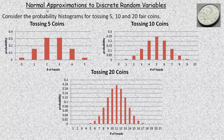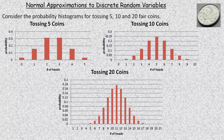In this tutorial we're going to take a look at the normal approximation to some discrete random variables, specifically the binomial and hypergeometric. As a little prelude into this idea, we're going to start with the binomial first.